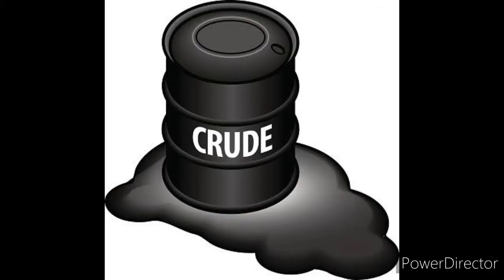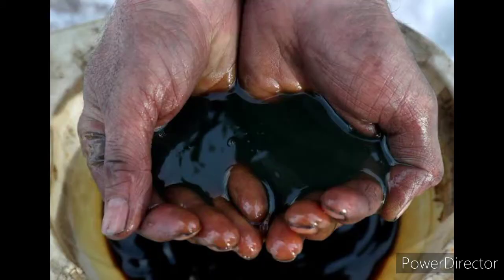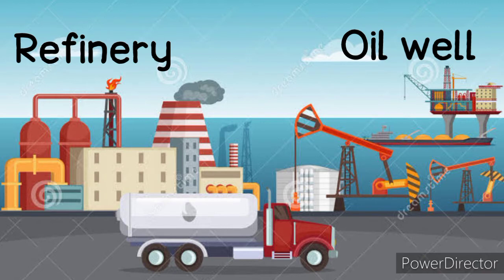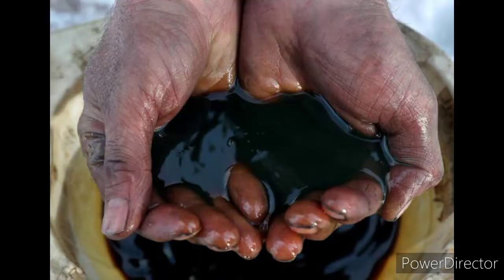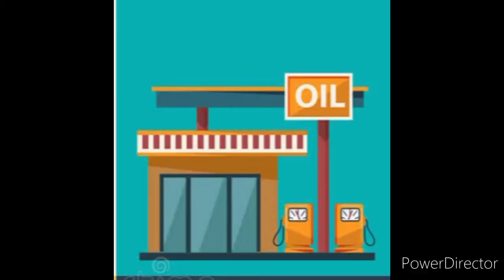Transporting crude oil: crude oil is the oil that is naturally available deep underground. This crude oil is transported from the oil well to the refinery through pipelines. A refinery is a place where this crude oil, which has many other materials mixed in it, is processed. After refining, it is then transported to the marketplace through pipelines.